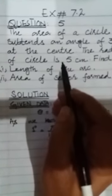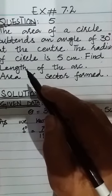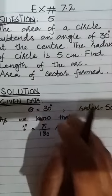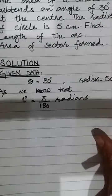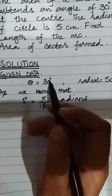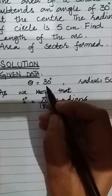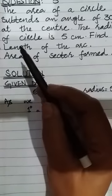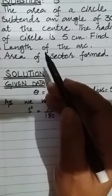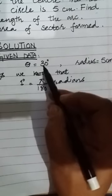In this question we have the value of theta and the value of radius, and we have to find the length of the arc and the area of the sector. Theta is 30 degrees, so first of all we have to convert 30 degrees into radians, because theta is the ratio of the length of the arc and radius of the circle.